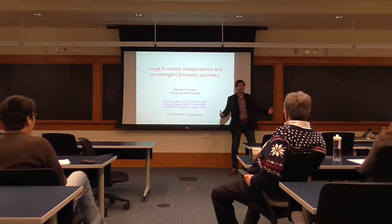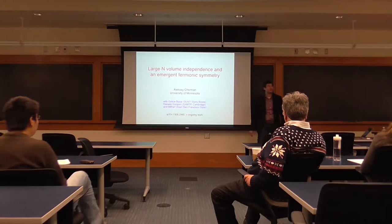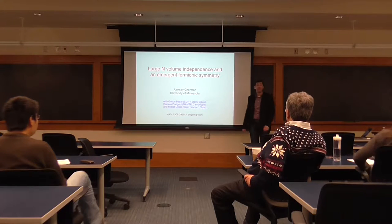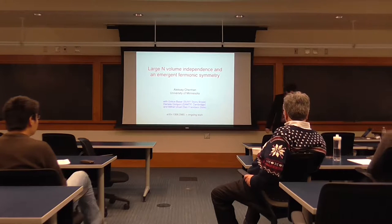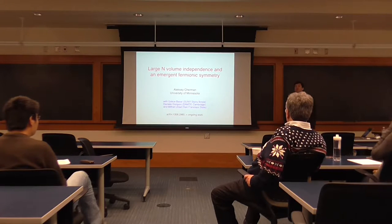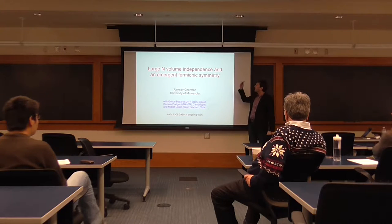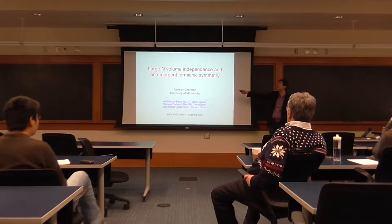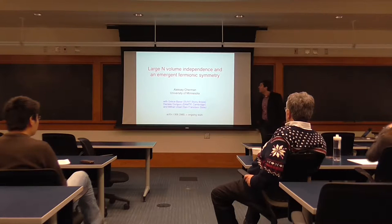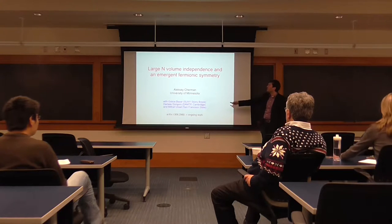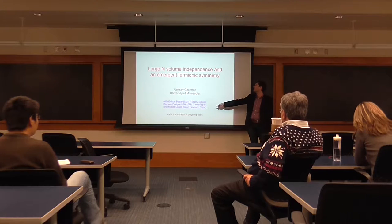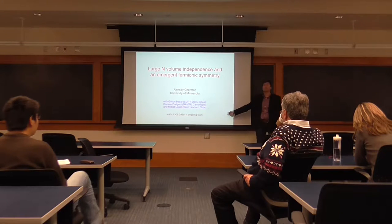All right. Well, first of all, thanks for letting me come here. It's been a ton of fun so far. So today I'm going to tell you about something called large-N volume independence, which I suspect most of you haven't heard of. It's not a very widely known thing. And I'm going to tell you about an implication that it apparently has, which is very striking: there should be an emergent fermionic symmetry in a theory which does not have supersymmetry. This is work done with Broshe-Basar, Daniela Deryagina, Mithat Ünsal, and Simon Muriano.